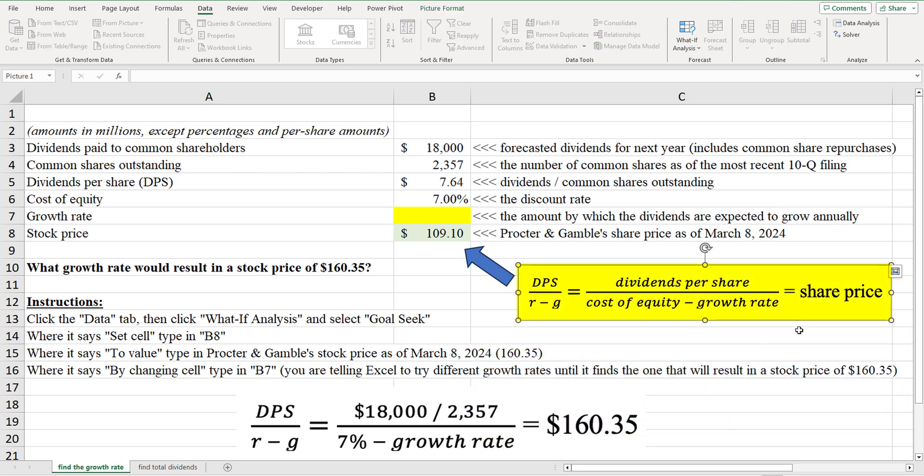So let's take the Gordon Growth Model. It's a form of dividends-based valuation in which we estimate a company's share price based on its forecasted dividends. In short, we take the forecasted dividends per share and divide it by the difference between a company's cost of equity, which we can calculate using the capital asset pricing model, and the expected growth rate of the dividends.